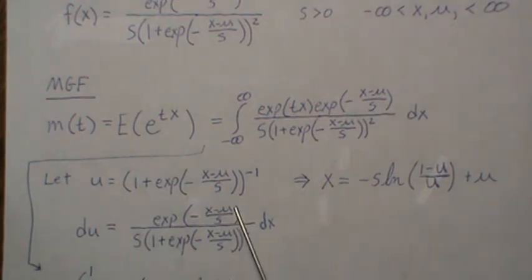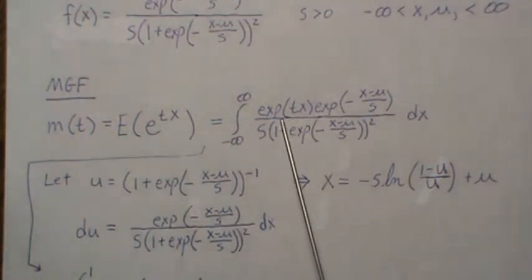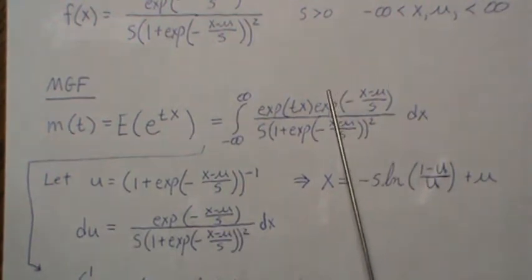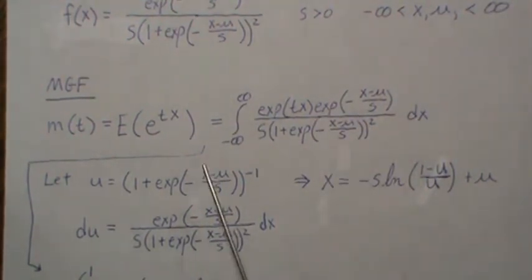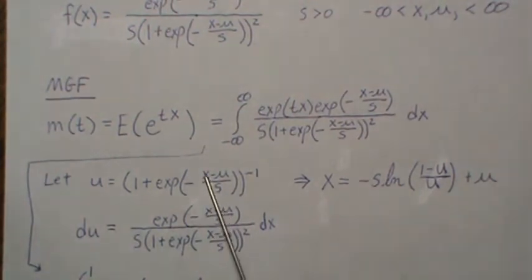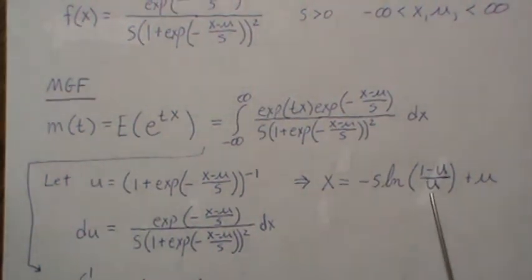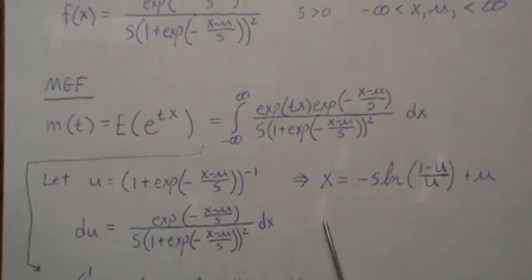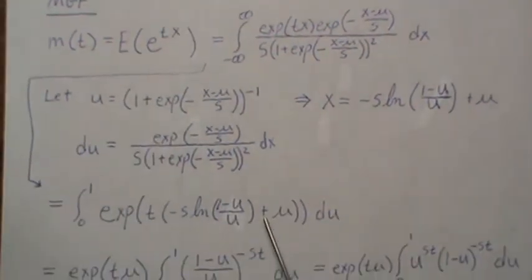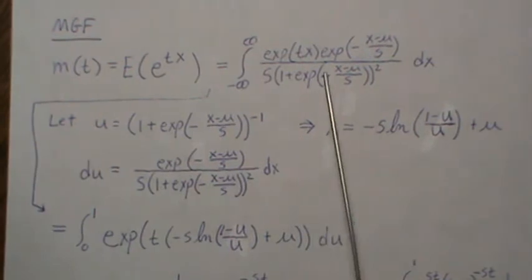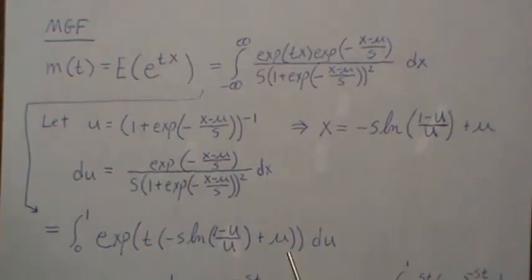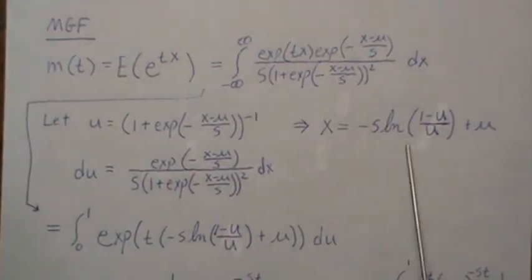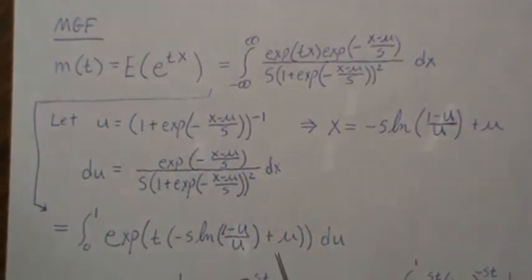The nice thing about this is that this whole piece here is now du. And if we use this first piece, we can back-solve for x, and we get minus s times log of (1 minus u) over u, plus mu. Now we substitute these back in, and we get this — this is all part of du, and then we stick this x right there.